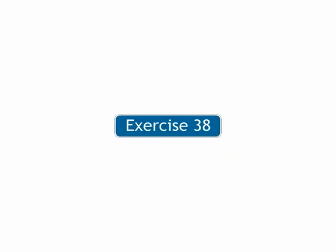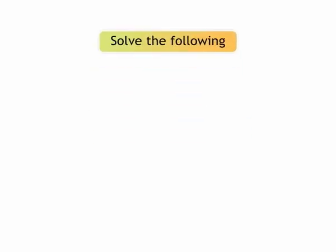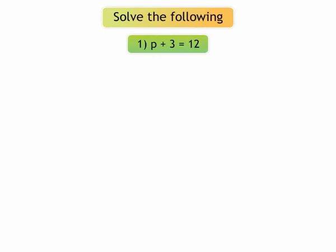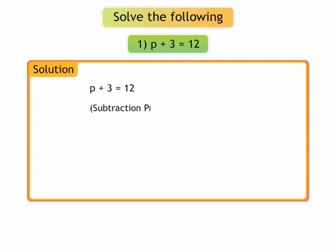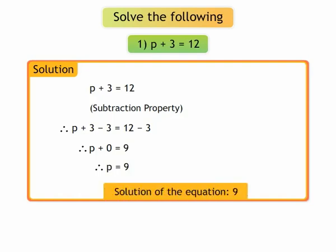Now we shall solve equations from exercise 38 using properties of equation. Solve the following. 1. P plus 3 is equal to 12. Let us simplify the equation using subtraction property. Therefore, we get P plus 3 minus 3 is equal to 12 minus 3, which gives P is equal to 9. Thus, the solution of the equation is 9.